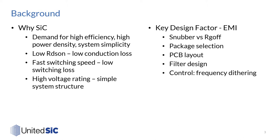Before we start, I would like to share the background story. Why do we need silicon carbide? It's because of the increasing demand for high efficiency, high power density, and system simplicity. We need low RDS(on) to have low conduction loss, which enables high efficiency. We need fast switching speed to have low switching loss, enabling high efficiency and high power density. We also need high voltage rating to have a simpler system structure, going 2-level instead of 3-level. However, to practically enjoy all these benefits, EMI is the key design factor.